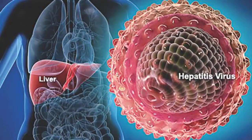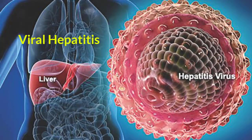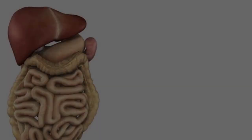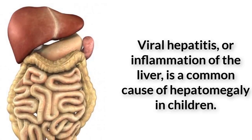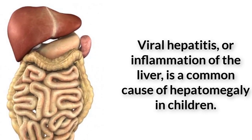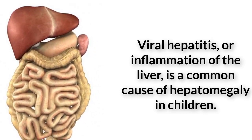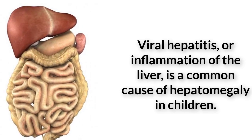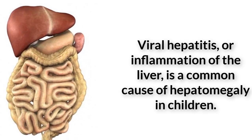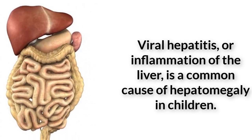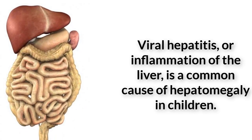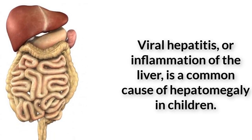Viral hepatitis, or inflammation of the liver, is a common cause of hepatomegaly in children. According to the National Digestive Diseases Information Clearinghouse, the main viruses that cause hepatitis are the hepatitis viruses A, B, C, D and E, the Epstein-Barr virus, which causes infectious mononucleosis, or mono, adenovirus, and parvovirus.